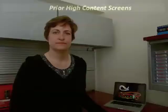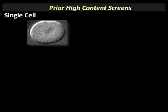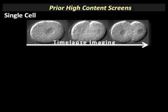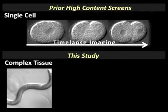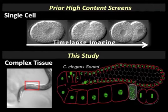Most high-content screening has been done in single cells, often imaging them over time to increase information content. Here, we take a different approach to increase information content, imaging a complex tissue in a multicellular organism, the nematode C. elegans. The tissue we chose is the C. elegans reproductive organ, or gonad, which we image at a single time point following gene knockdown.